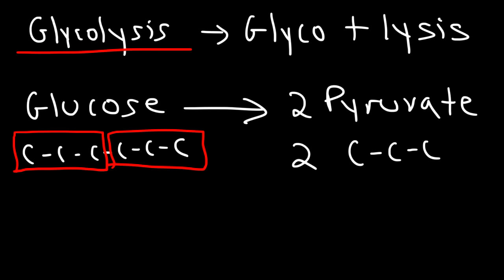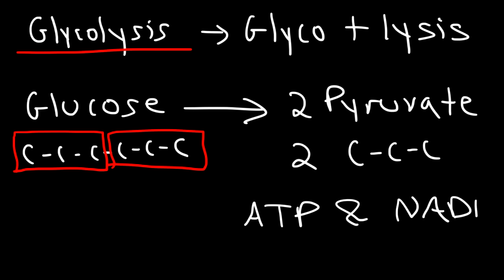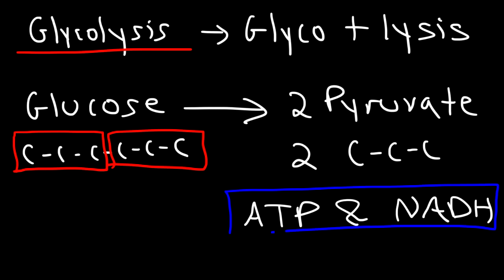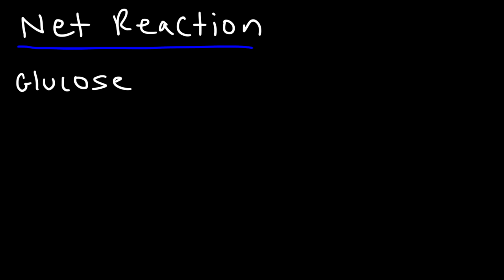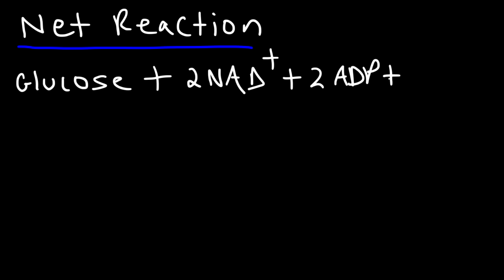In this process, some of the energy released as glucose converts into two molecules of pyruvate is captured in the form of ATP and NADH. So glycolysis is an energy-producing process. Now let's discuss the net reaction of glycolysis. Glycolysis takes place in the cytosol of the cell. In the net reaction, we start with a molecule of glucose which reacts with two NAD+ molecules and two ADP units — adenosine diphosphate — with two inorganic phosphate ions.